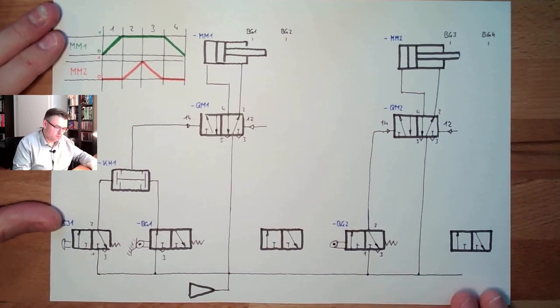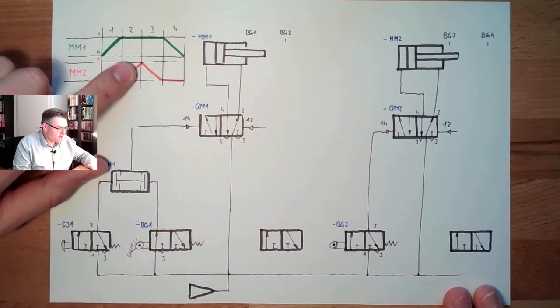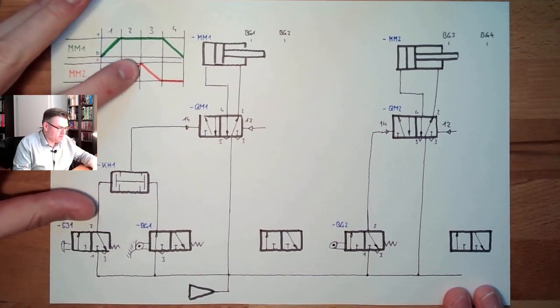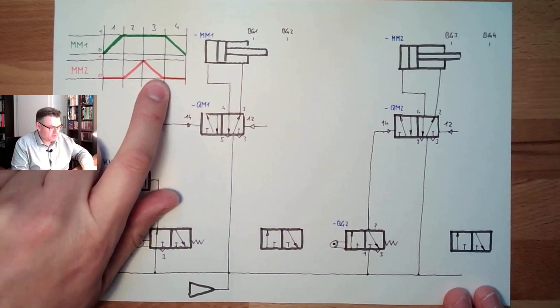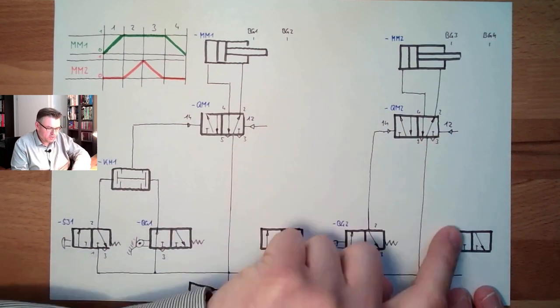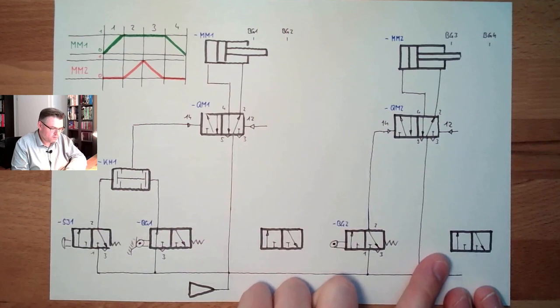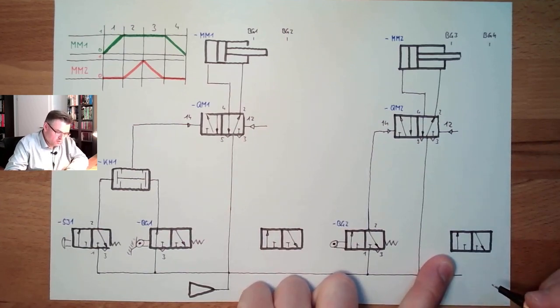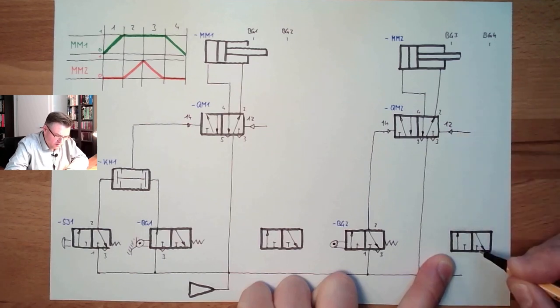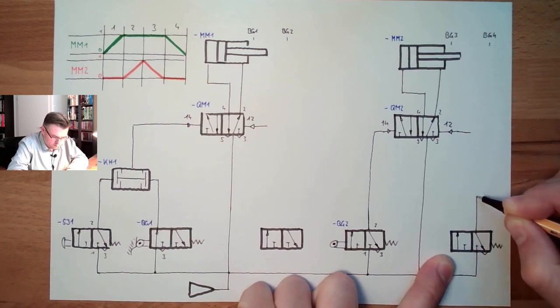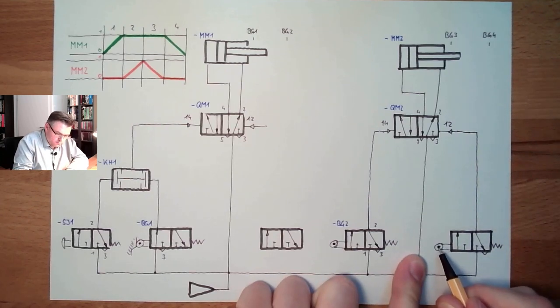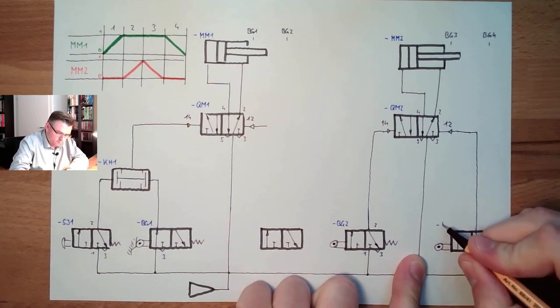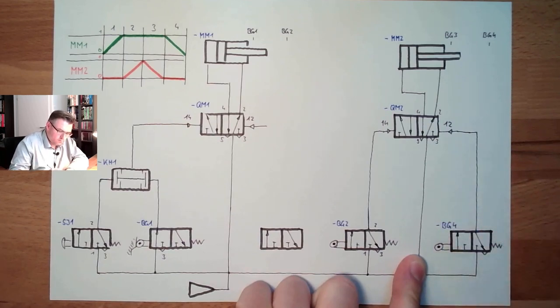Next thing, what shall happen? If we are outwards, so if we are touching BG4, then we shall travel inwards again. Okay, so this must be the switching here, this must be BG4. This is not pressed at the beginning. So, we are here. Okay?